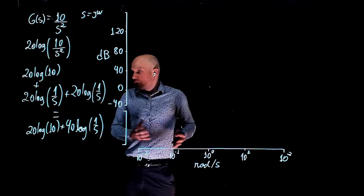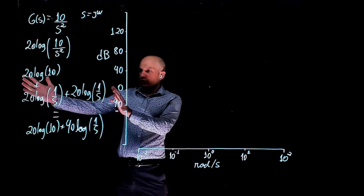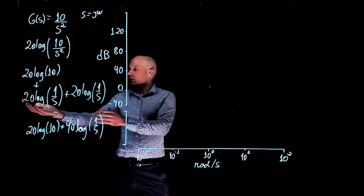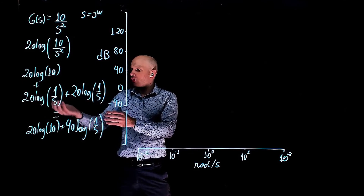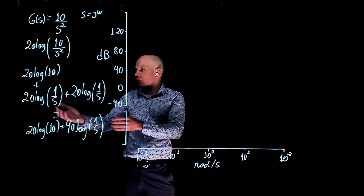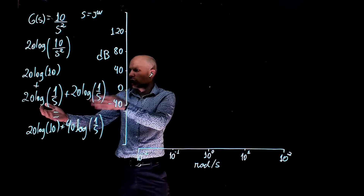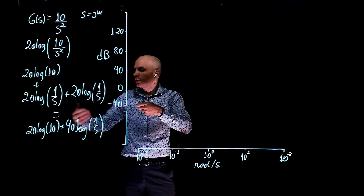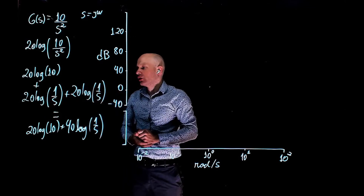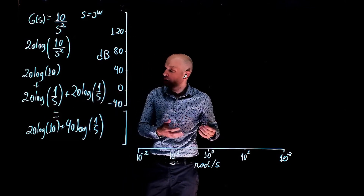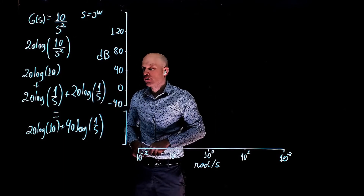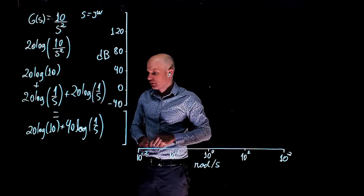Or we could instead use these three elements here, but the two representations are equal. We see that we have 20 log of 1 over s squared, which is equivalent to 20 log of 1 over s plus 20 log of 1 over s, or 40 log of 1 over s.